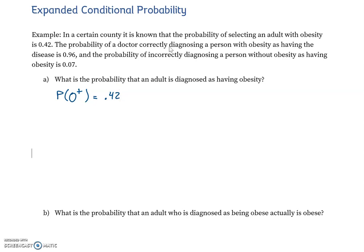The probability of a doctor correctly diagnosing a person with obesity as having the disease is 0.96. That means the probability of a positive diagnosis, D+, given that the person is obese, O+, equals 0.96 — so a pretty high likelihood of correct diagnosis.